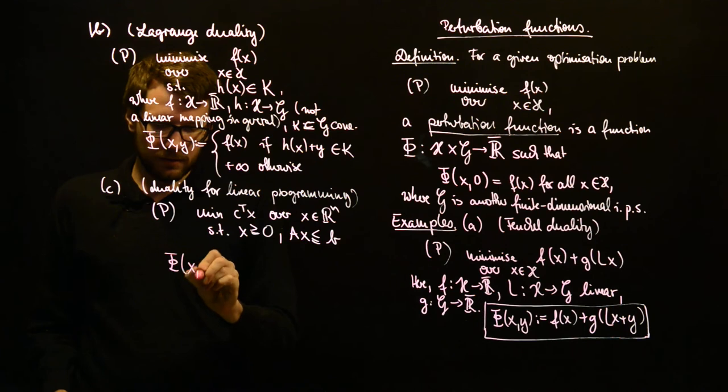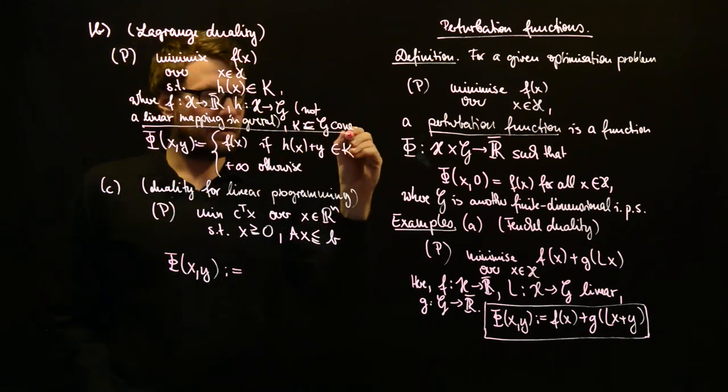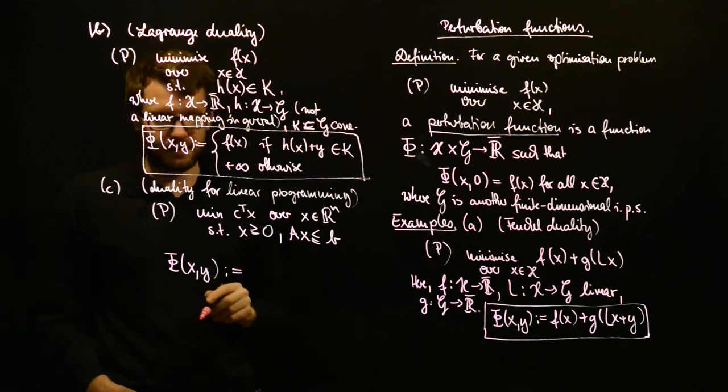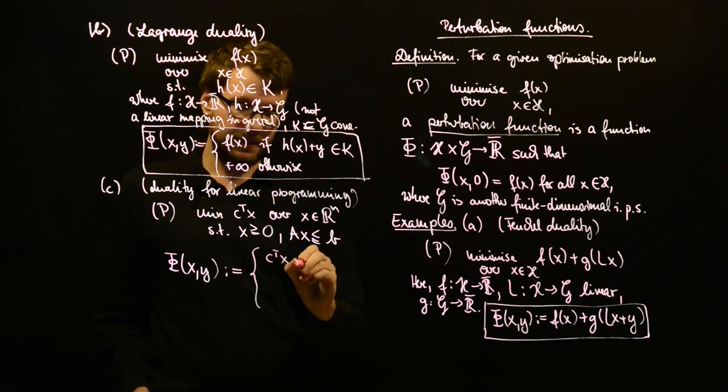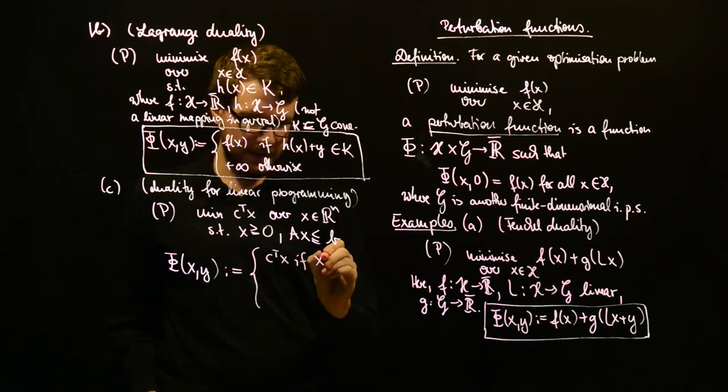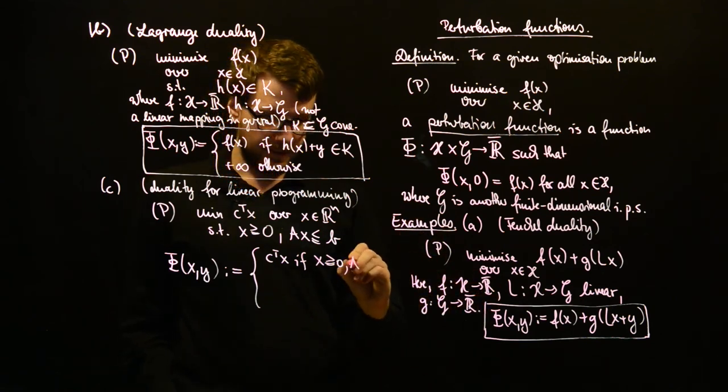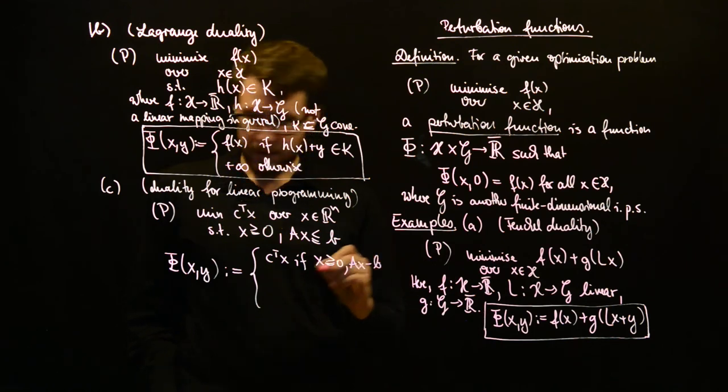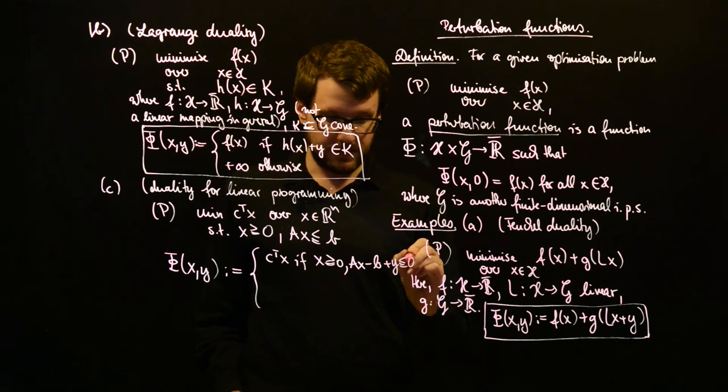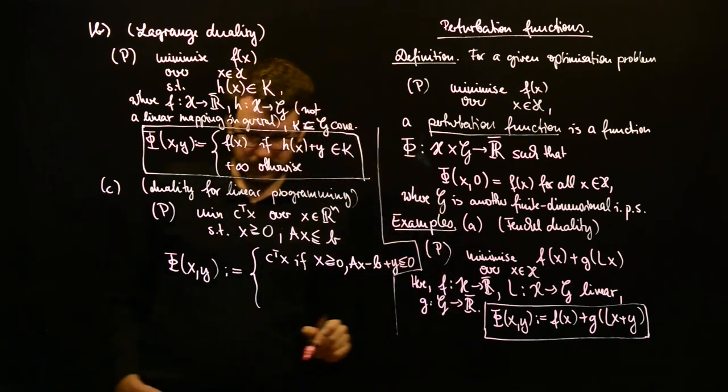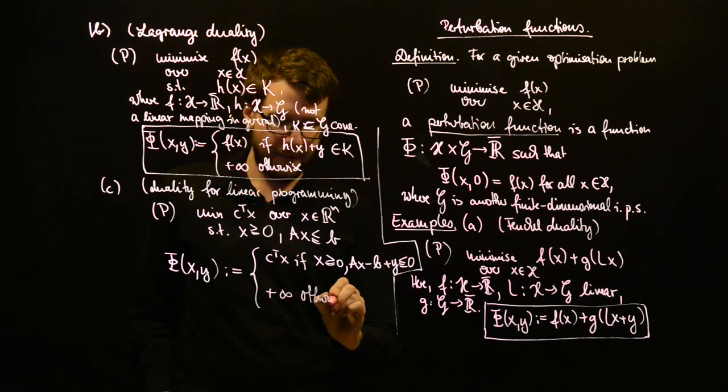And then you can write phi of, you can define phi(x,y). By the way, I should also give this a box here so that you can easily recognize it. So, here, phi(x,y) will be, basically, as above, C transpose x if x is greater or equal than, consists of greater or equal than zero entries, and Ax minus b, and here we can also add our variable y, is less or equal than zero. And my space management is a bit poor. And then, plus infinity otherwise.